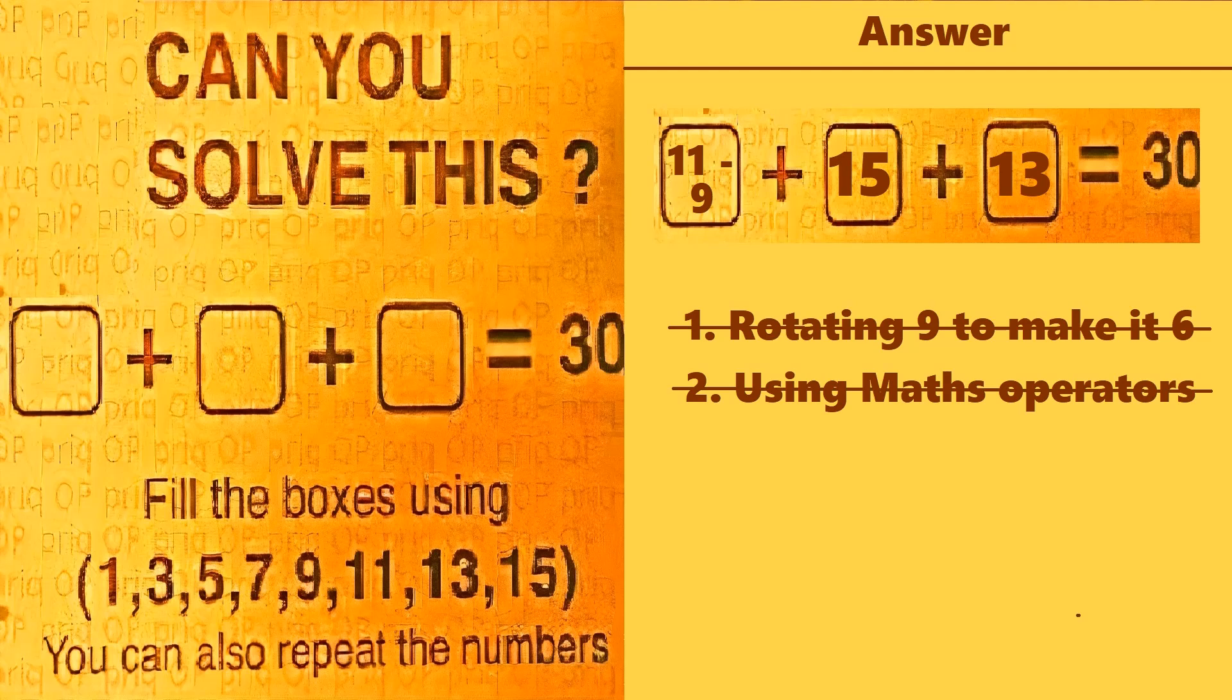Let's move on to the third solution. We can use factorials. In the first box we can use 3 factorial, which will give you 6, then in the second box we use 11, and in the third box we use 13, and this gives you 30. But we don't have the factorial symbol in the question, so we can't use it.